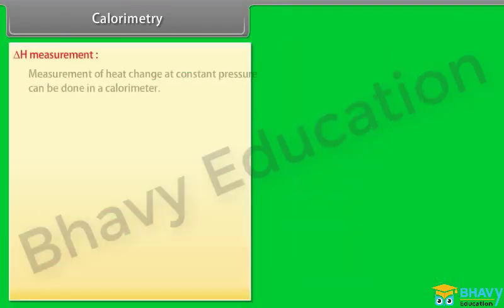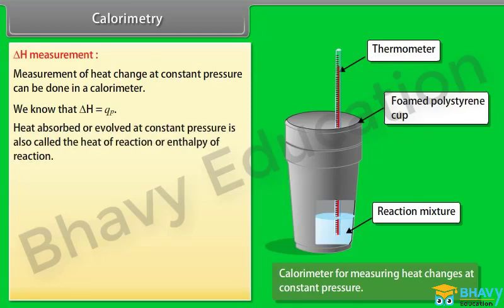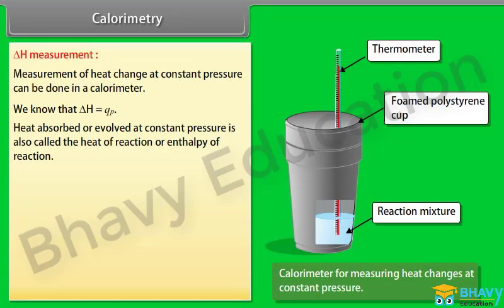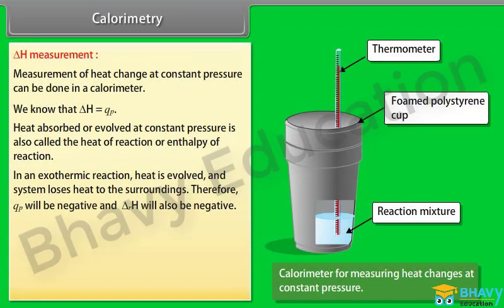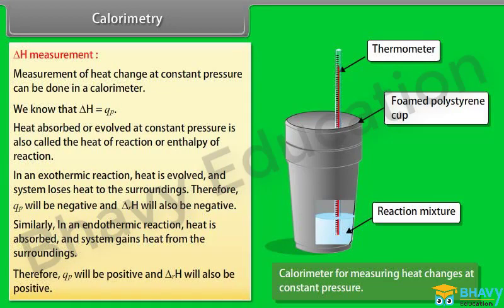Delta H measurement: measurement of heat change at constant pressure can be done in a calorimeter. We know that delta H = QP. Heat absorbed or evolved at constant pressure is also called the heat of reaction or enthalpy of reaction. In an exothermic reaction, heat is evolved and the system loses heat to the surroundings; therefore QP will be negative and delta RH will also be negative. Similarly, in an endothermic reaction, heat is absorbed and the system gains heat from the surroundings; therefore QP will be positive and delta RH will also be positive.